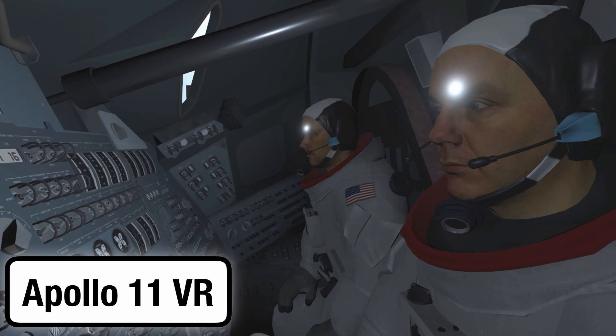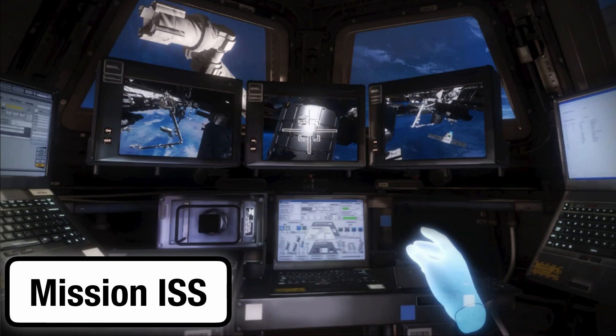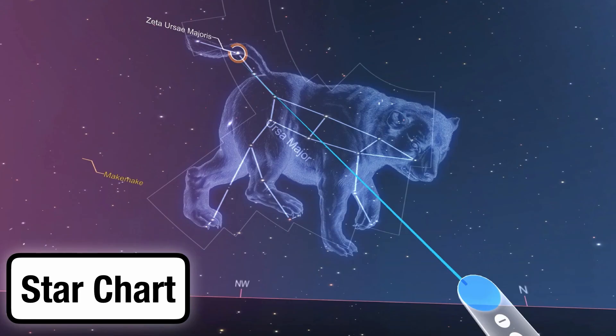More unique astronomy and space-related options include the Apollo 11 VR experience and Mission ISS. Both of these allow users to follow in the footsteps of real space explorers. Virtual reality software such as StarChart allows users to identify constellations in Earth's sky, fulfilling the role of the traditional planetarium.